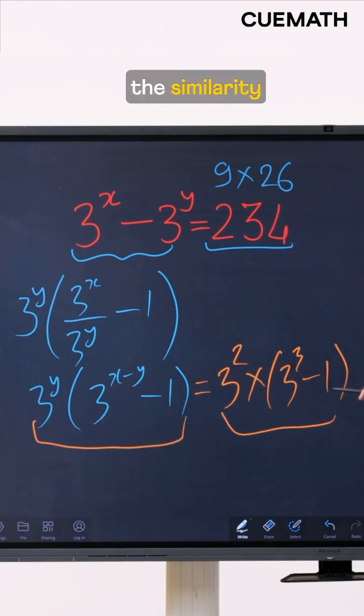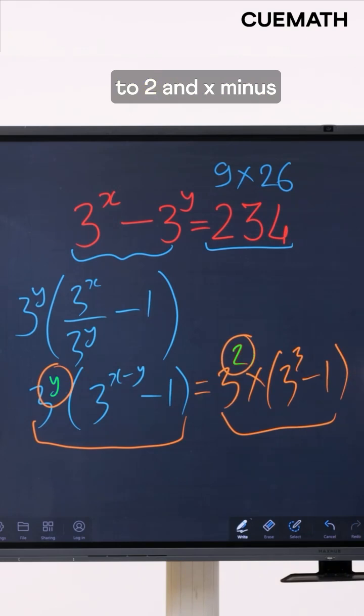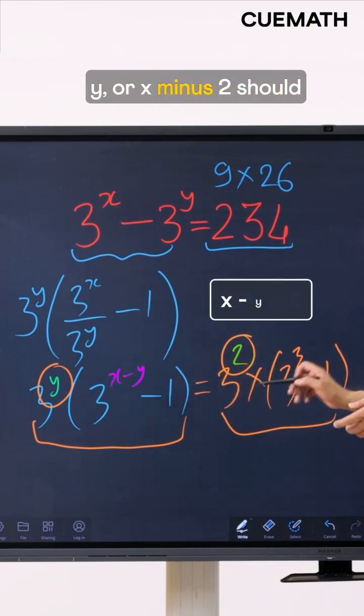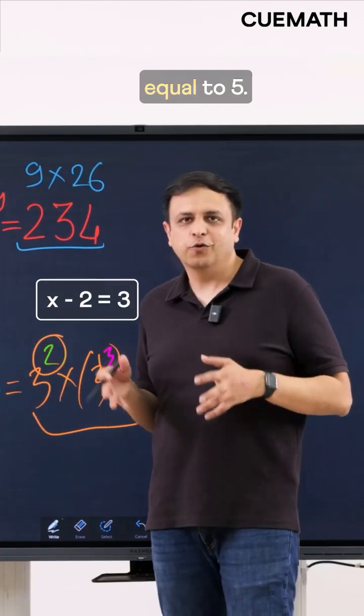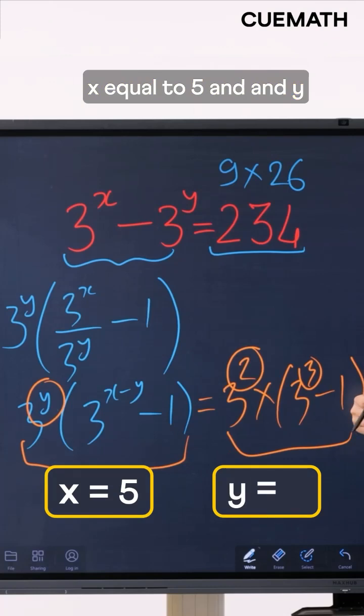So y should be equal to 2 and x minus y or x minus 2 should be equal to 3. So x should be equal to 5. The solution to this equation is x equal to 5 and y equal to 2.